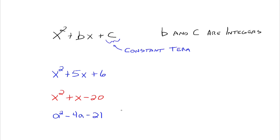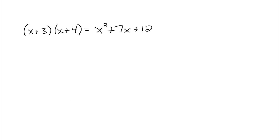The whole idea of factoring is to rewrite an expression as a product of factors. Before we get to the factoring, let's refresh our memory on some multiplication. Recall that x plus 3 times x plus 4, when you multiply that out, you distribute the x through and then distribute the 3 through. You'd have x squared plus 4x and then 3x plus 12, and combining the like terms gives you x squared plus 7x plus 12.